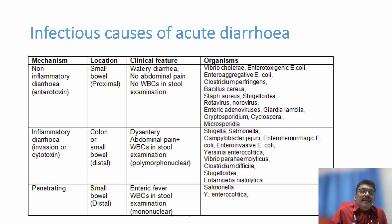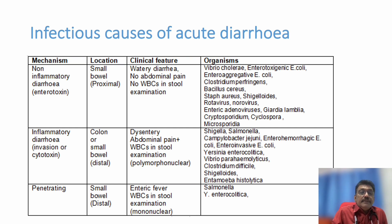Depending on the area affected, we can classify diarrhea: non-inflammatory small bowel diarrhea presents as watery diarrhea with no abdominal pain and no WBCs in stool. Inflammatory diarrhea affecting the colon or distal small bowel presents as dysentery — blood in stools, abdominal pain, and WBCs in stool examination. Penetrating infections in the small bowel cause enteric fever with WBCs in stool. Different bacteria have distinct clinical findings.